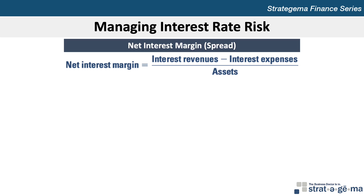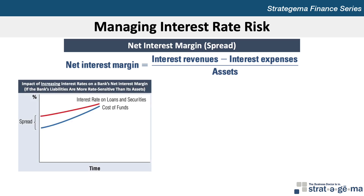The amount and direction of change depend on whether bank assets are more or less rate sensitive than bank liabilities, the degree of rate sensitivity, and the direction of interest rate movements. During a period of rising interest rates, a bank's net interest margin will likely decrease if its liabilities are more rate sensitive than its assets, as illustrated in this exhibit.